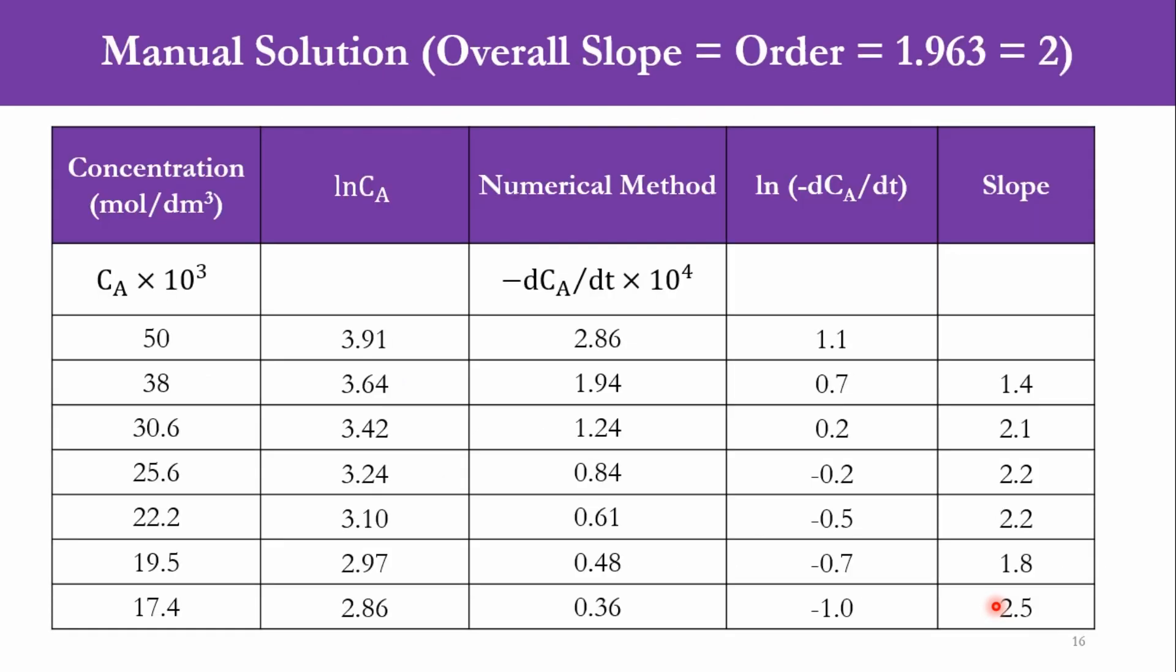This is the Excel way of doing it, but if you want to solve it manually, how can you do it? These are the concentration values and these are the -dC/dt values from numerical method. You have to simply take the natural log of these values, and then you have to simply find the slope. So it will be 1.4, 2.1, 2.2, 2.2, 1.8 and 2.1. So if you take overall slope of this system it will be 1.963 or we can say the reaction is second order with respect to the specie A which is given to us in our system. And if you obviously want to solve the value of k', you have to simply divide this value to this value, but obviously you have to consider that it is -dC/dt and it is CA. So it will be (50×10^-3)² and it will be 2.86×10^-4. Accordingly you can solve it manually as well, you can solve it using Excel as well.